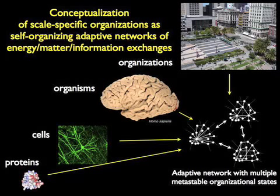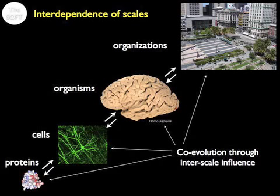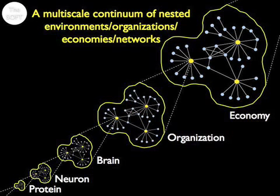Think of the protein molecule as a network of interacting amino acids. Think of the cell as a network of interacting proteins and other molecules. Think of the organism as a network of interacting cells, and the organization as a network of interacting individuals, and so forth. Because different scales of biological organizational hierarchy are nested and interdependent — proteins function within the environment of a cell, while cells function within the environment of an organism, and organisms in turn function within the environment of an ecosystem or organization — it was recently suggested that living matter as a whole constitutes one evolving multiscale continuum.